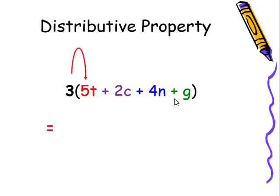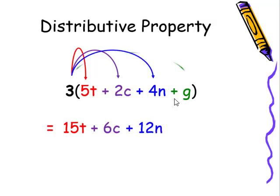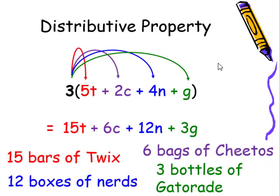Distribute, three times five T would be 15 T, three times two would give us six C, three times four N would give us the 12 N, and three times G would give us the three G. Remember, there's that invisible one. And that would give us the 15 bars of Twix, the six bags of Cheetos, the 12 boxes of Nerds, and the three bottles of Gatorade.